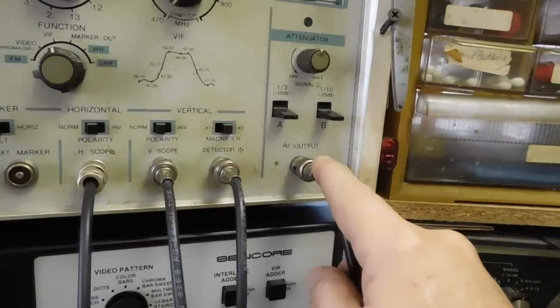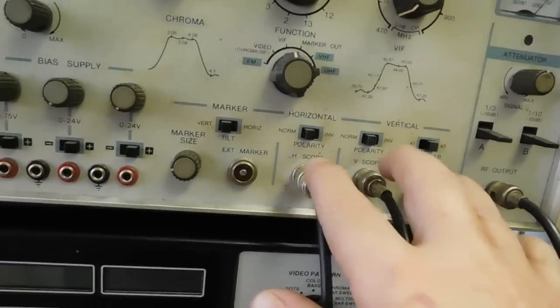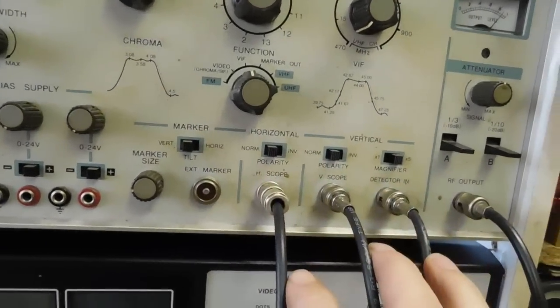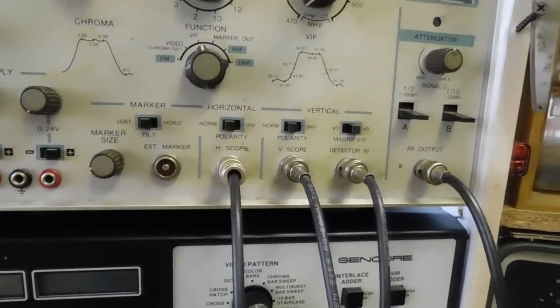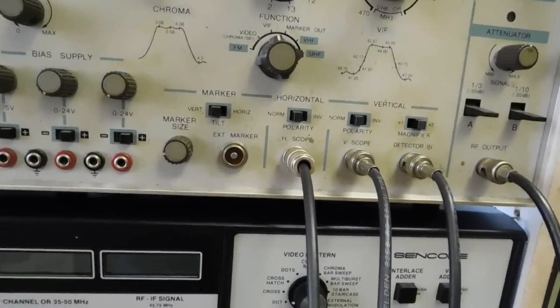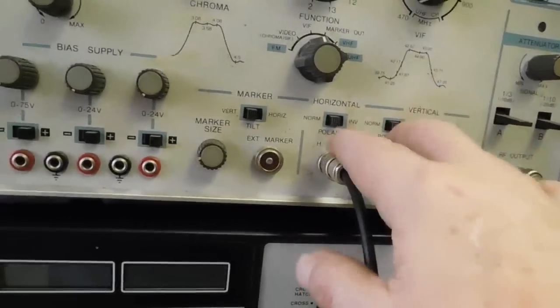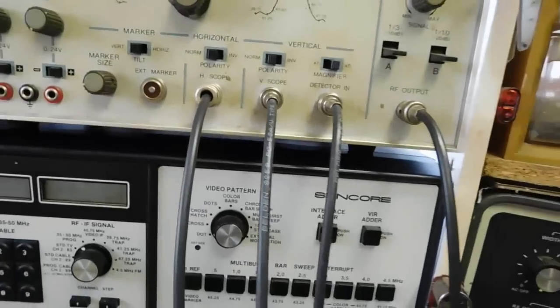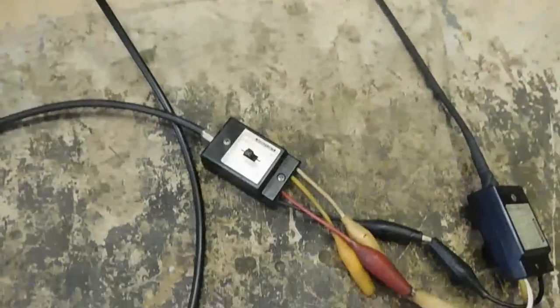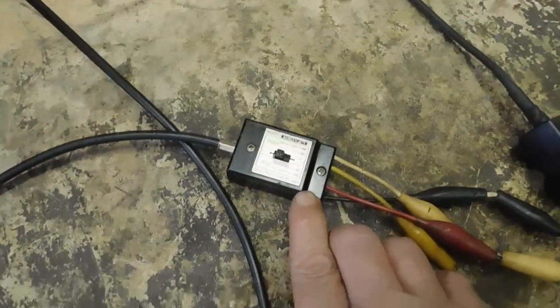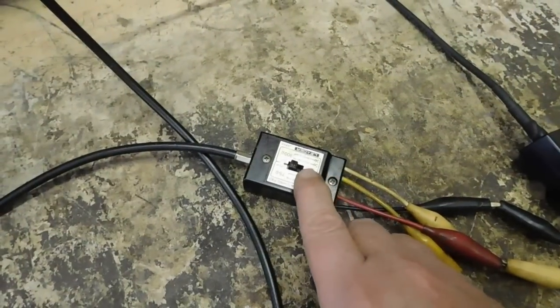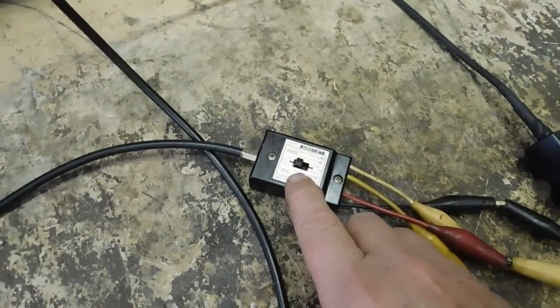Originally when I got this, the only BNC connector was on the RF output. These three were the Amphenol mic connectors. I changed those out for BNCs here. And it did come with the supply cables. The two cables go on the scope, so I had to change the ends for those because they weren't BNC on this end.